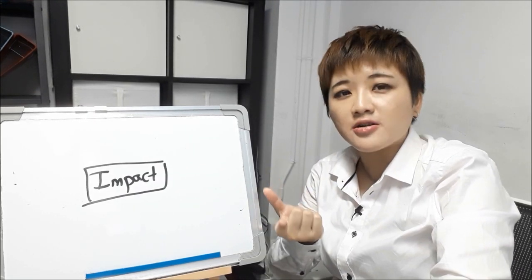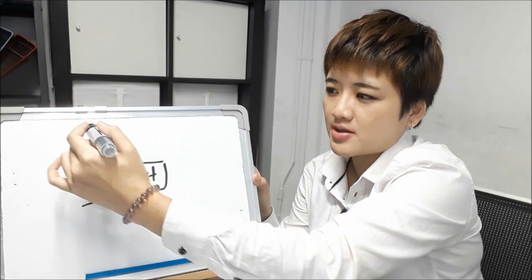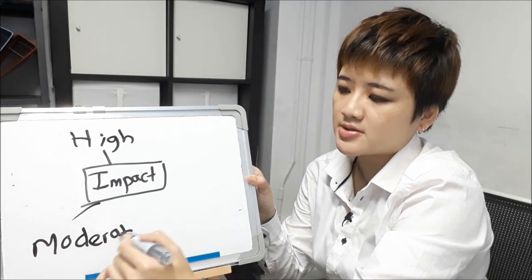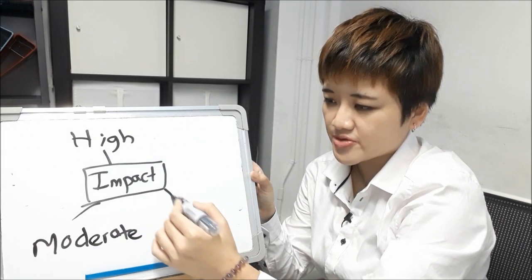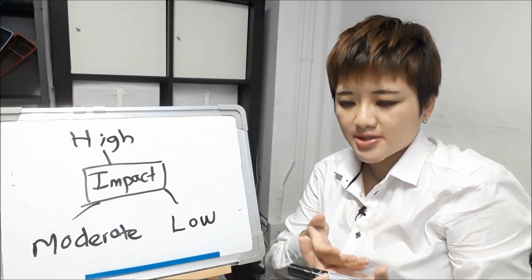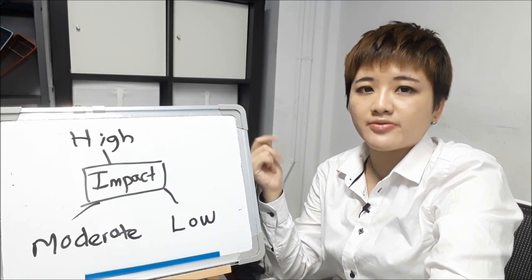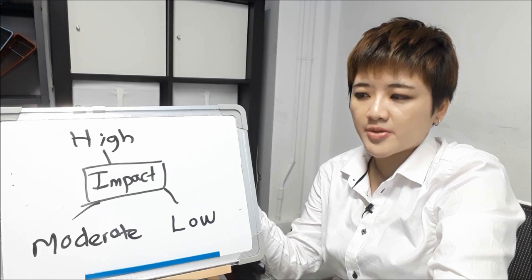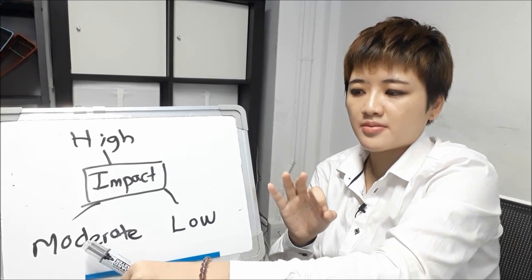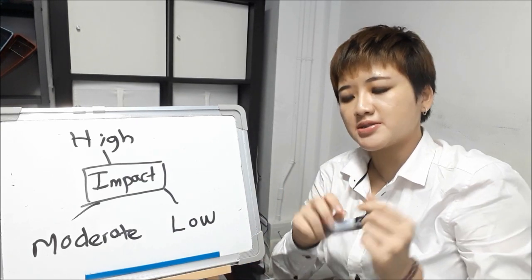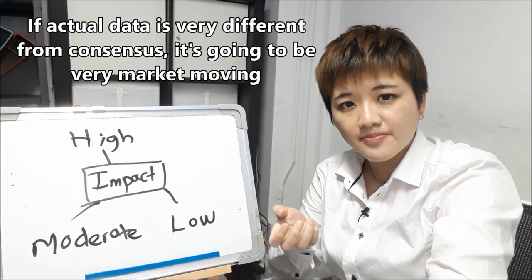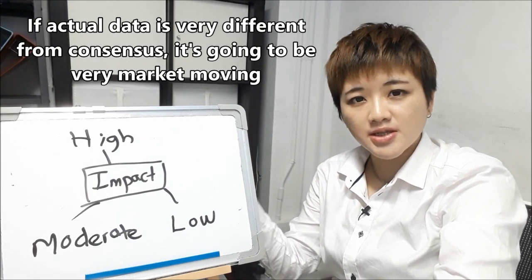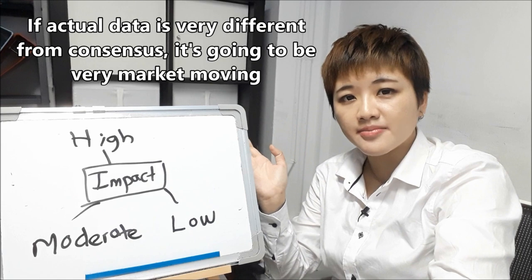A lot of retail traders classify economic indicators in terms of impact — high impact events, moderate impact events (normally orange on forex calendars), and low impact events. If you're a day trader or scalper, look at the high impact events first because they tend to produce the most volatility. But don't ignore moderate and low impact events — if the actual release is very different from consensus, it's going to move the markets a lot. If the actual release is quite similar to consensus, it won't be that market-moving.